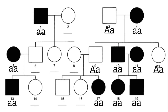Let's take a look at individuals 6, 7, and 8. None of them have the disorder. However, their father has the disorder. So that makes it likely that the mother, individual 2, was most likely a homozygous dominant individual, which means there was no chance that any children from the cross between individuals 1 and 2 would have had the disease — but they would all be carriers, or heterozygous individuals. So individuals 6, 7, and 8 are all heterozygous as well.